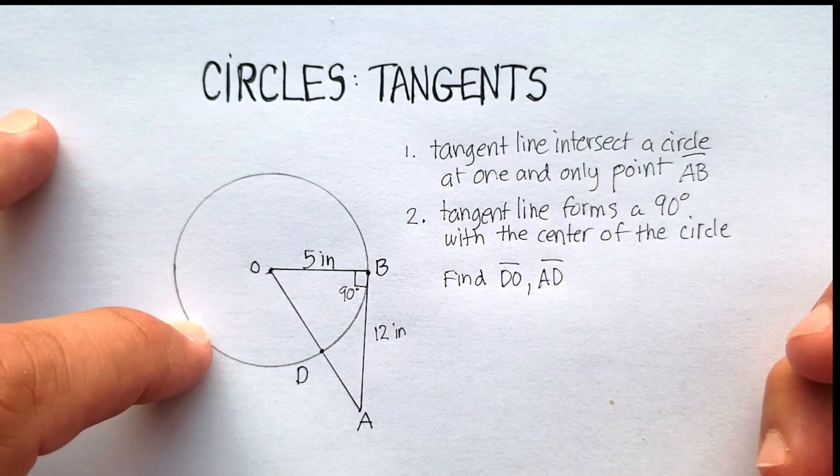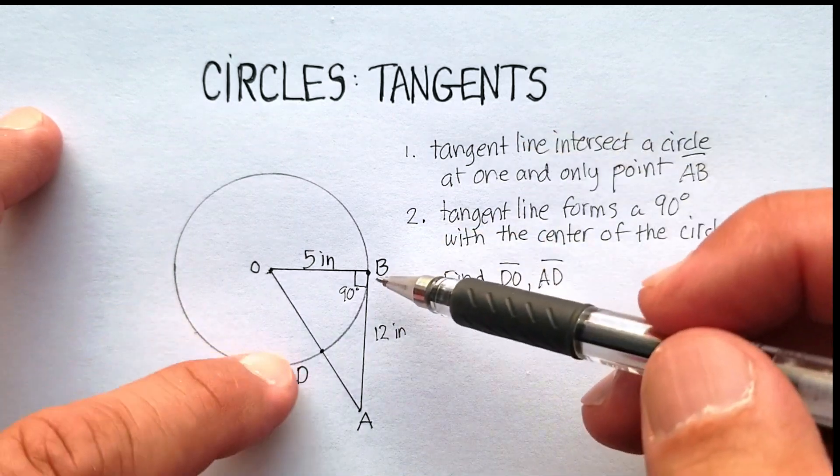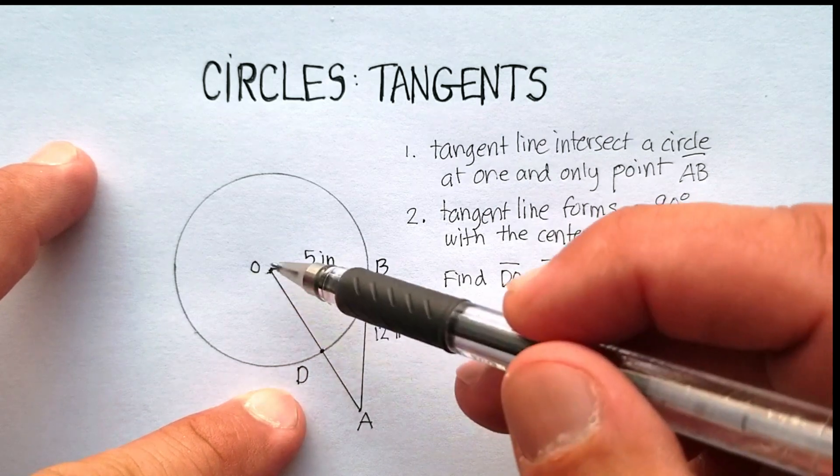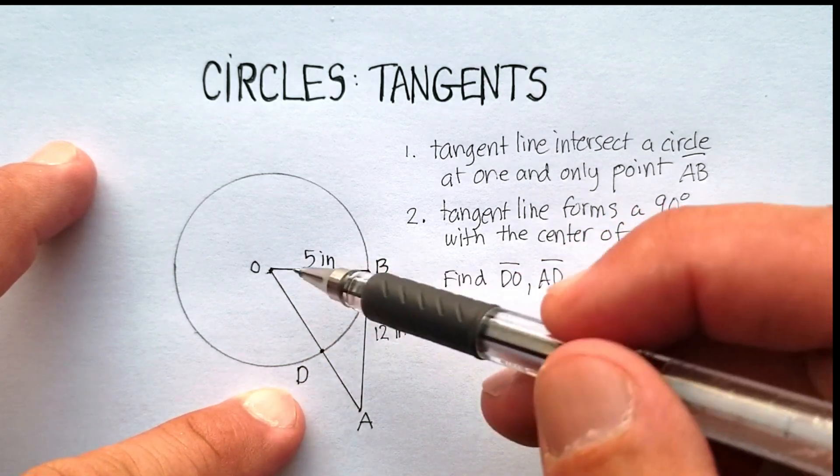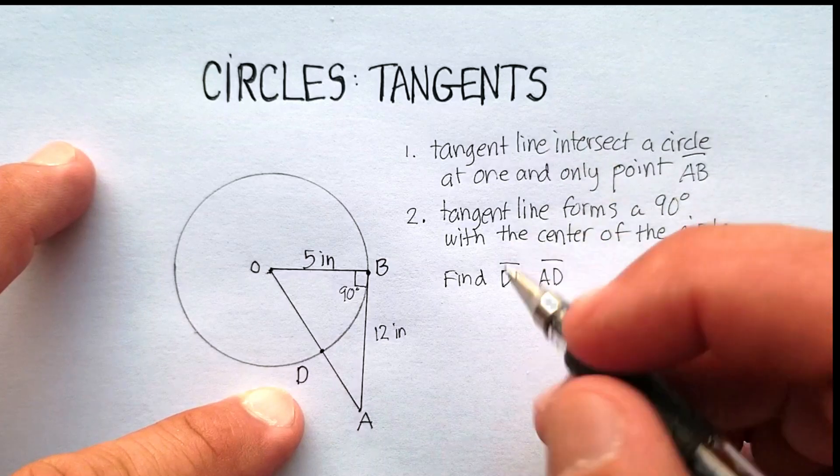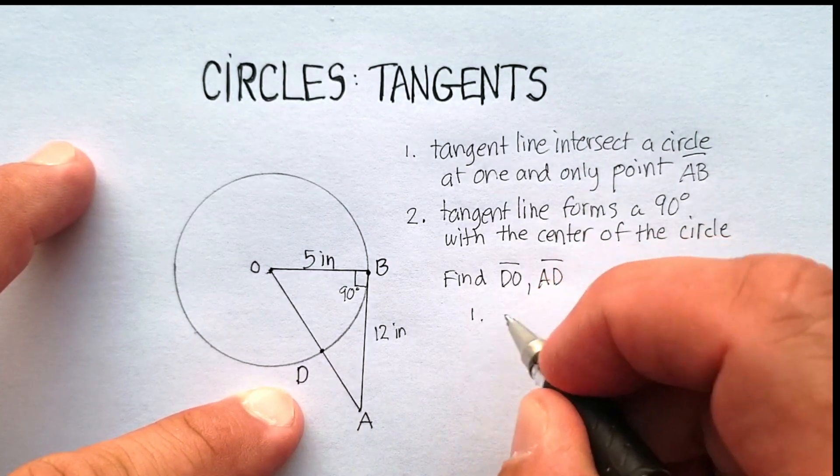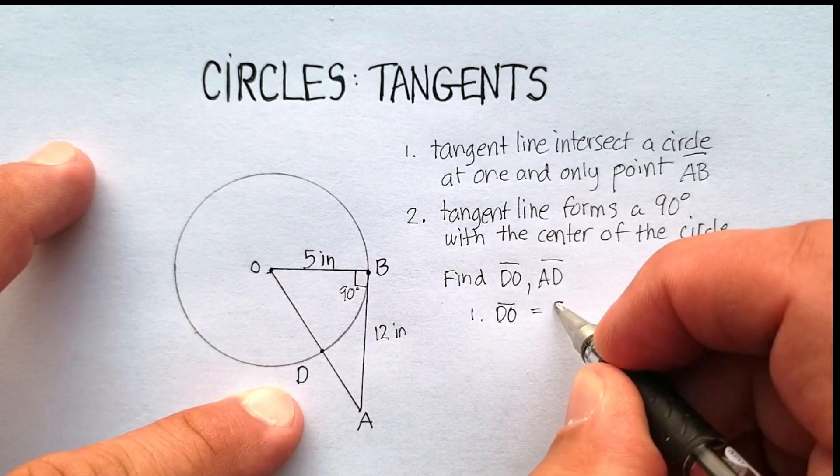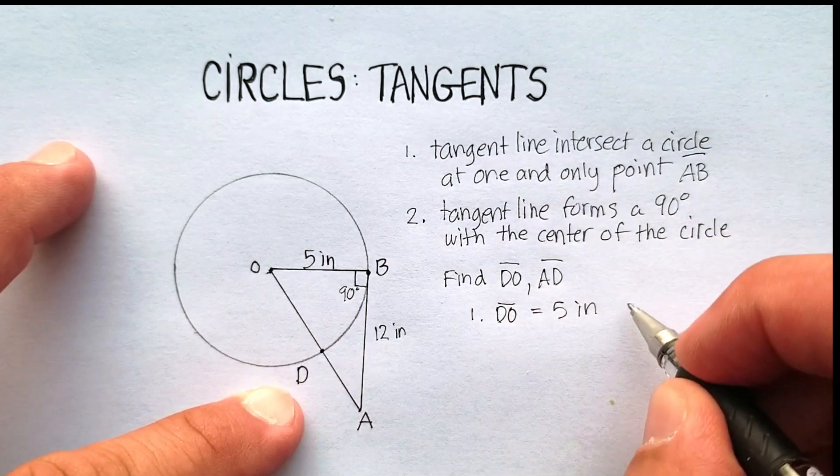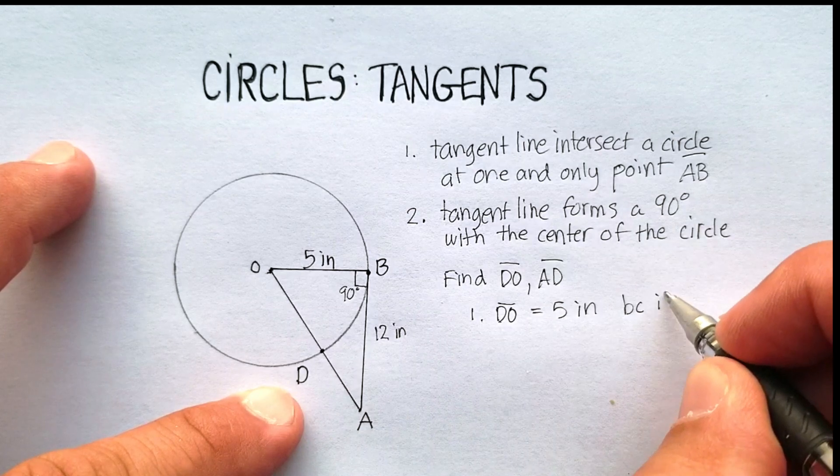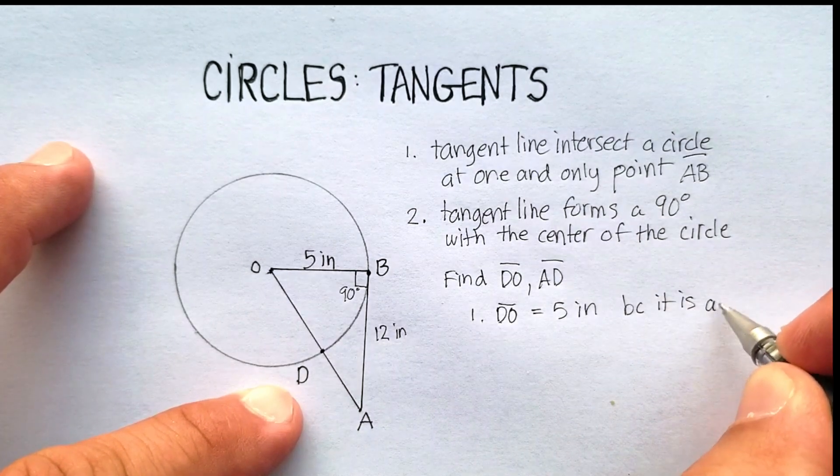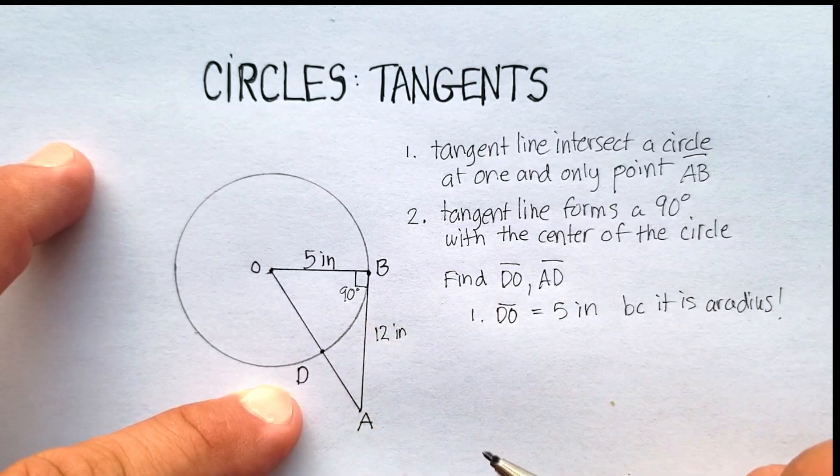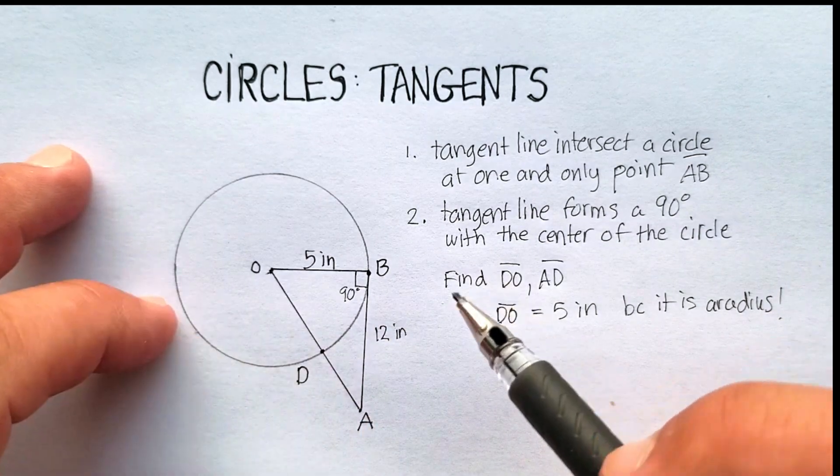Now, we know something. We know that from O to D is basically just the radius of the circle, and we determined the radius of the circle is just 5 inches. So we know that D-O equals 5 inches because it is a radius.